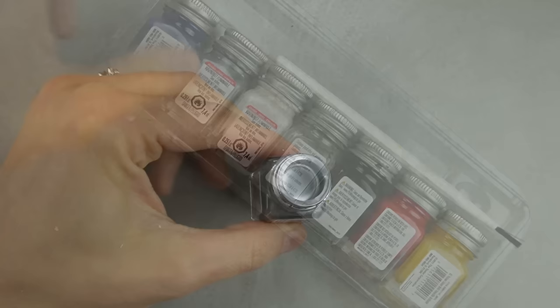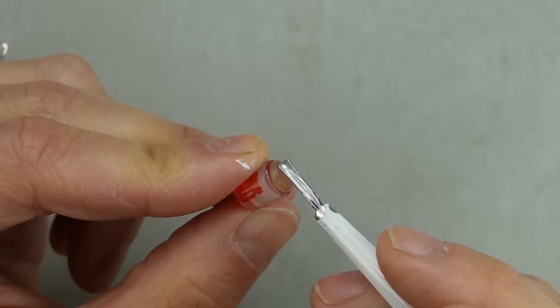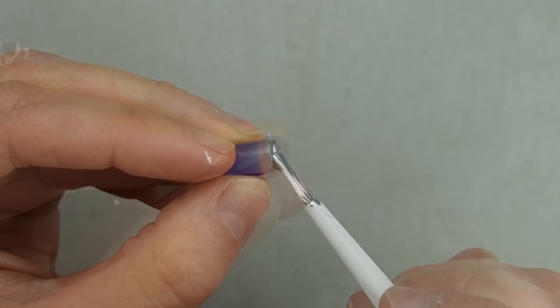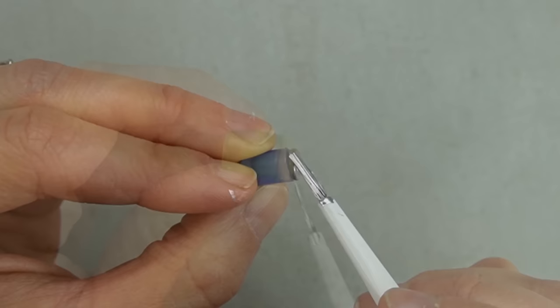I'm using some oil-based testers enamel paint to paint some of the lids metal. I chose the best looking lids to receive the paint. Others will be covered up with either paper or fabric.